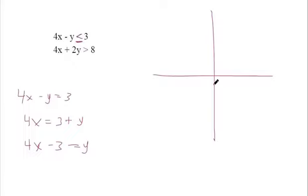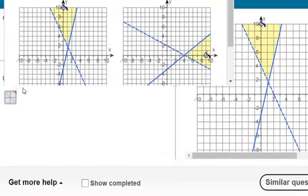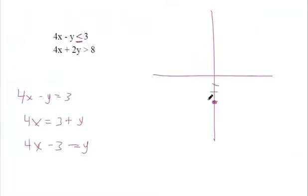That means negative 3 is my y-intercept. I can put a dot on there in my math lab. I'd put a dot there, and then I'd count up 1, 2, 3, 4 into the right one and put a dot. Then I'd use that line tool to draw a line. This one is a solid line because it has the or equal to symbol right here.